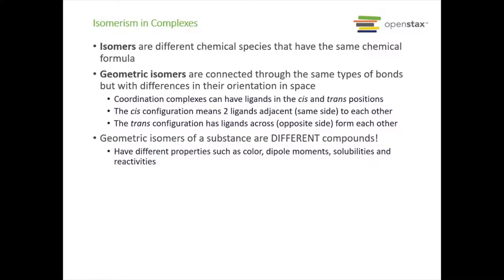Now let's talk about isomerism. Isomers are different chemical species that have the same chemical formula. The first type is geometric isomers — connected through space with the same types of bonds but with differences in their orientation in space. Ligands can be in cis or trans positions. Cis means two ligands are adjacent or on the same side of each other; trans means they're across or on opposite sides. These are different compounds with completely different properties: different colors, different dipole moments, different solubilities, different reactivities. For example, cis isomers might be polar, while the trans isomer has dipoles that cancel, making it nonpolar.